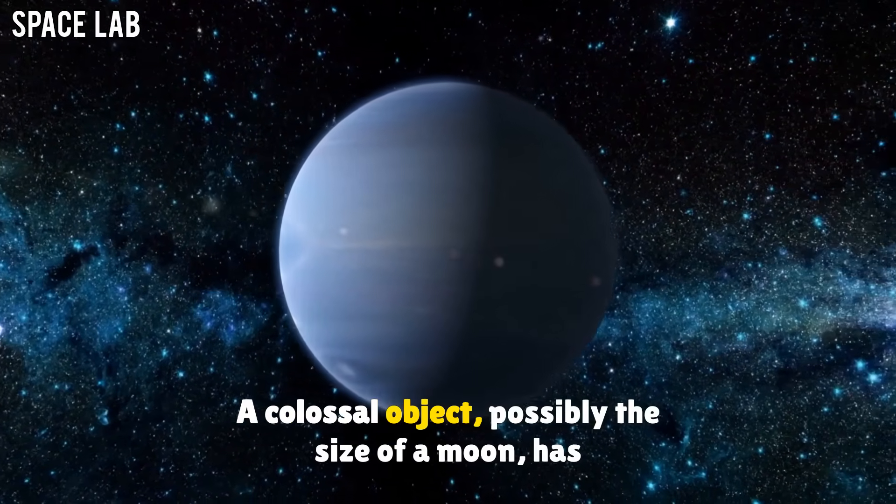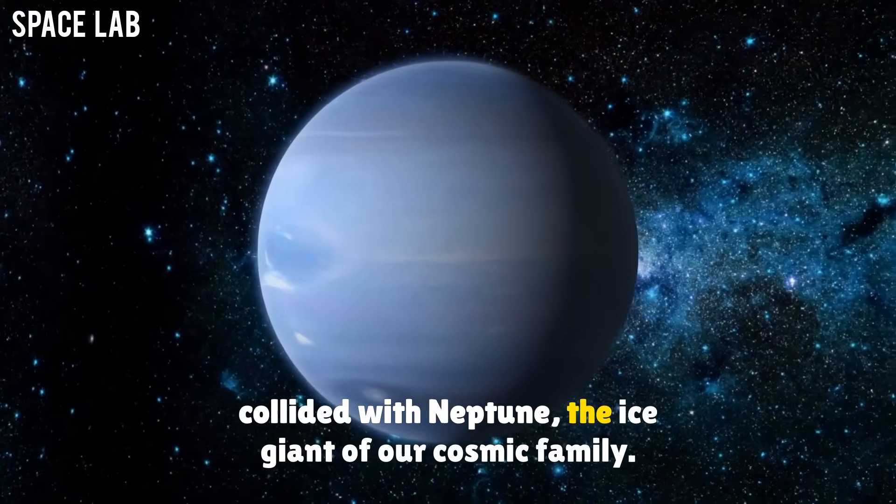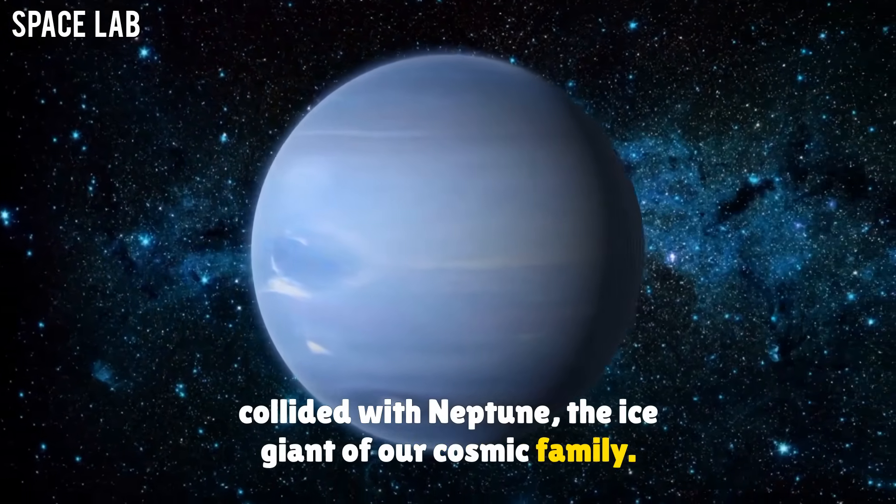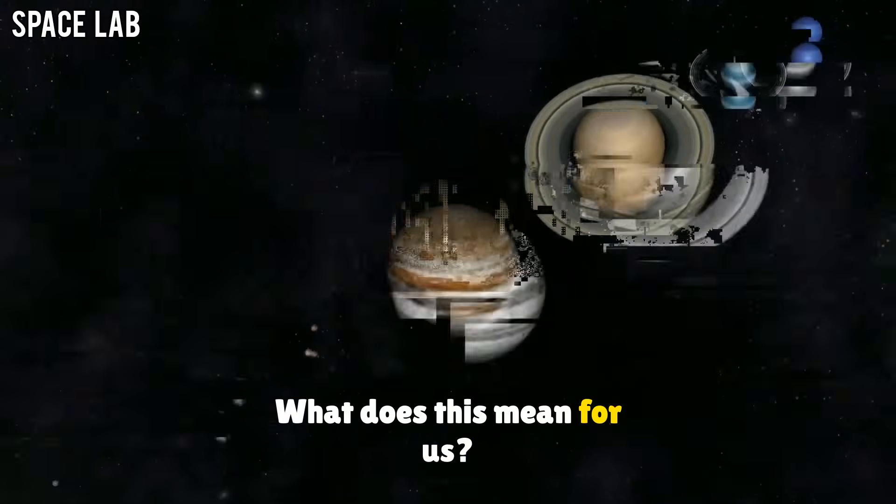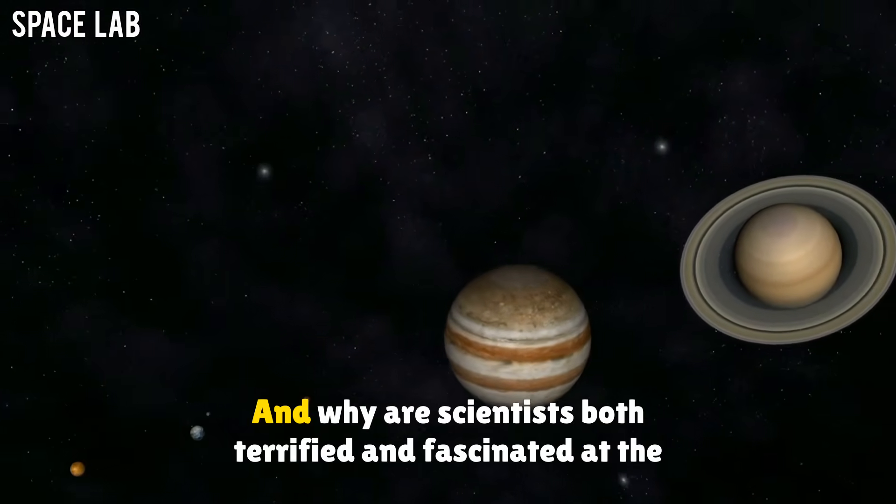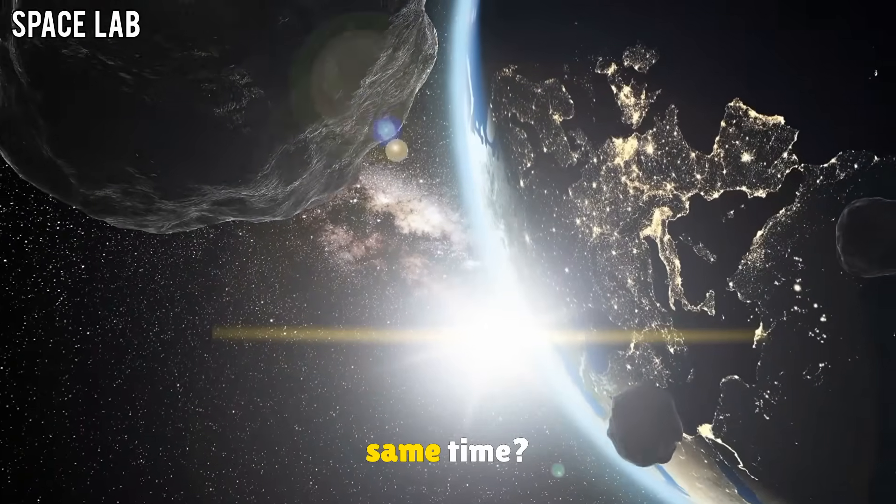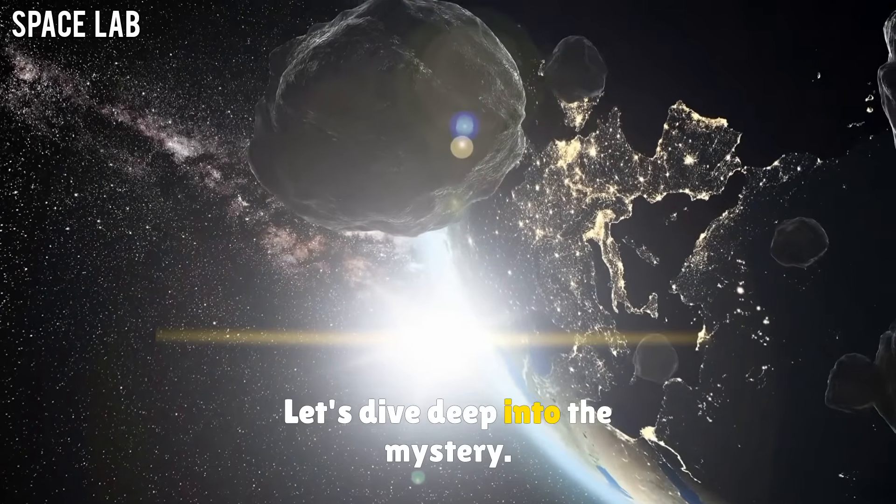A colossal object, possibly the size of a moon, has collided with Neptune, the ice giant of our cosmic family. What does this mean for us? What really happened on that distant blue planet? And why are scientists both terrified and fascinated at the same time? Let's dive deep into the mystery.